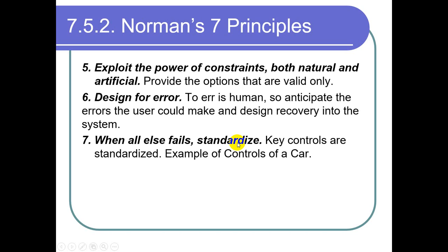Principle 7: When all else fails, standardize. When a product follows a standard, it will be easily understandable for everybody. For example, a 'File' menu contains options related to the file like New, Open, Close, Save, Save As. 'Edit' contains Cut, Copy, Paste. 'View' contains view-related options. When developing software, move towards standardization so users familiar with other applications feel at ease.